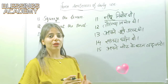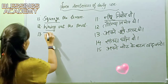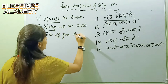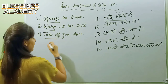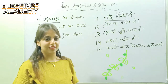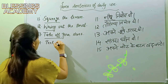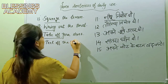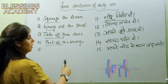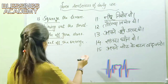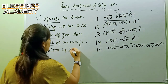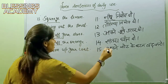Thirteenth: 'Joote utaro' — 'Take off your shoes.' 'Taking off' is used for removing shoes. Fourteenth: 'Santara chheel do' — a very common sentence. The translation is 'Peel off the orange.' 'Peel off' means 'chheelna.' Fifteenth: 'Coat ke button band karo' translates to 'Button up your coat.'